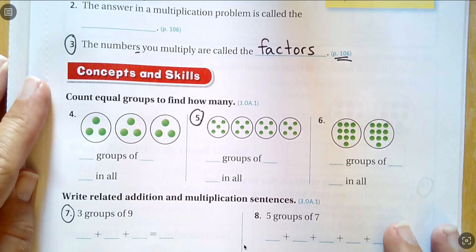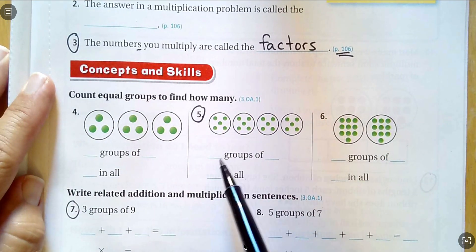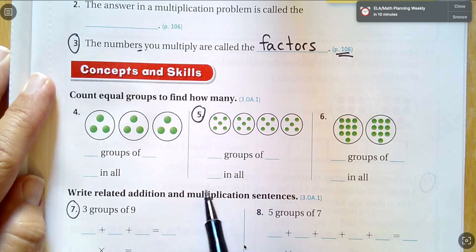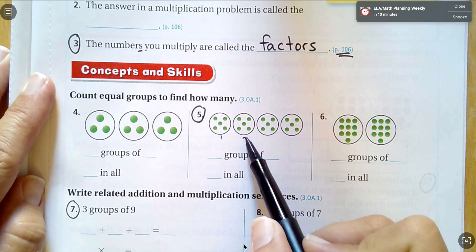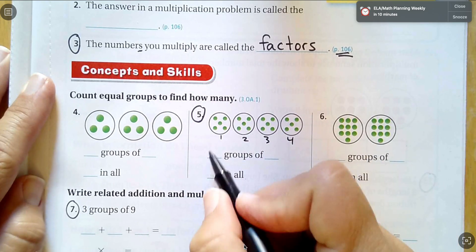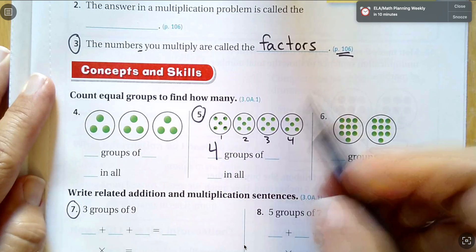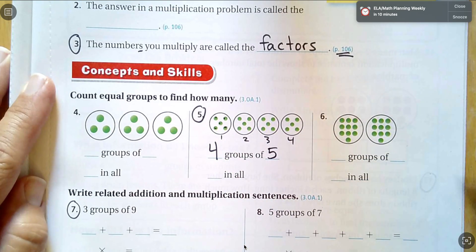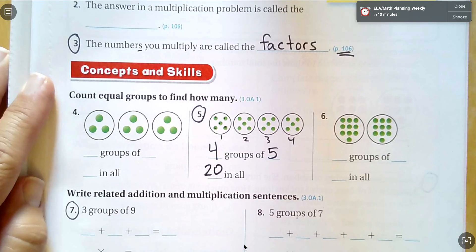Let's look at number five, concepts and skills. We're going to count equal groups to find how many. So blank groups of blank, blank in all. So I have one, two, three, four groups of one, two, three, four, five, four groups of five. So I'm counting by fives, five, 10, 15, 20. I have 20 in all.